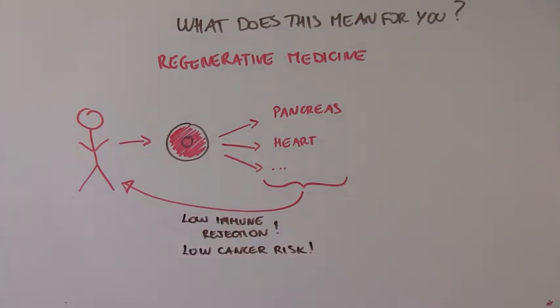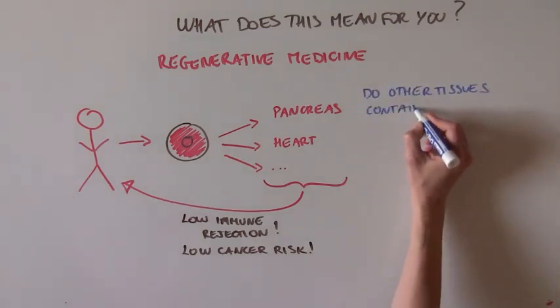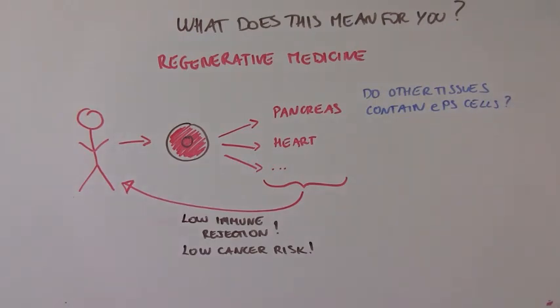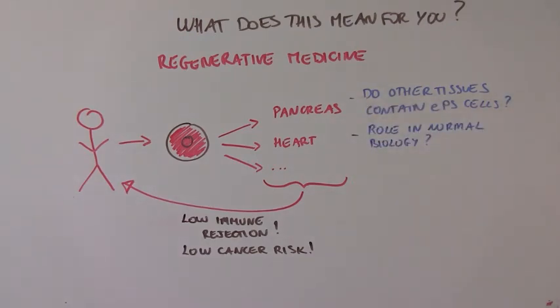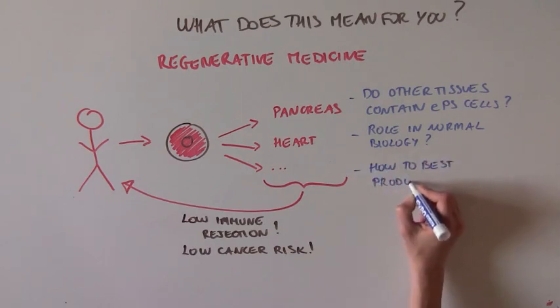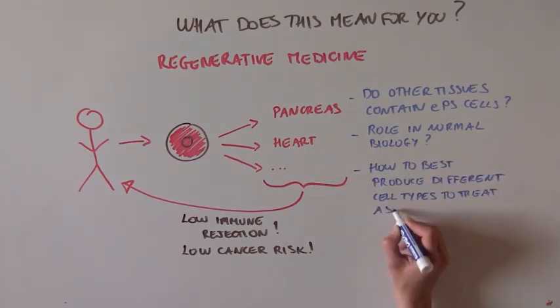Of course, much needs to be done before we can get to that point. Scientists are going to have to figure out if other tissues also contain these red EPS cells, understand their role in normal biology, and study how best to turn these EPS cells into a desired cell or tissue to treat a specific disease.